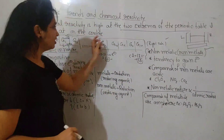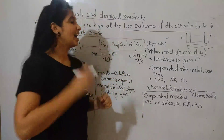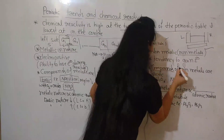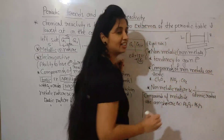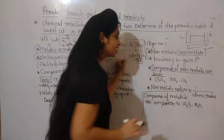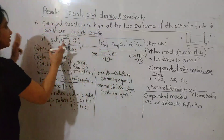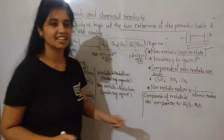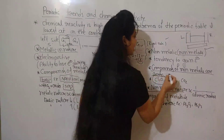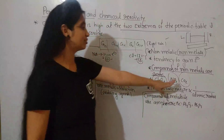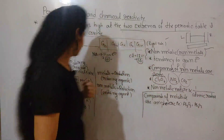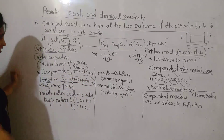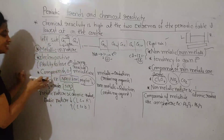When p-block elements react and form compounds, the compounds of these non-metals are acidic in nature. The compounds of metals are basic in nature and the compounds of non-metals are acidic in nature. Examples of acidic compounds: Cl2O7, NO2, and CO2. Examples of basic compounds: NaOH, KOH, Na2O, and magnesium hydroxide.